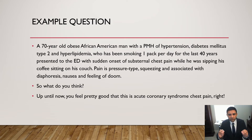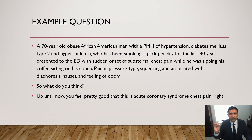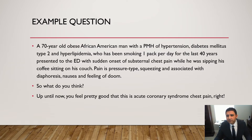Here is an example question. A 70-year-old obese African-American man with a past medical history of hypertension, diabetes mellitus type 2, and hyperlipidemia, who has been smoking one pack per day for the last 40 years, presented to the emergency department with sudden onset of substernal chest pain while he was sipping his coffee sitting on his couch. The pain is pressure-type, squeezing, and associated with diaphoresis, nausea, and a feeling of doom. I guarantee a lot of you are currently thinking this is acute coronary syndrome — this guy is either having unstable angina, a non-ST elevation MI, or an ST elevation MI. There's everything there.